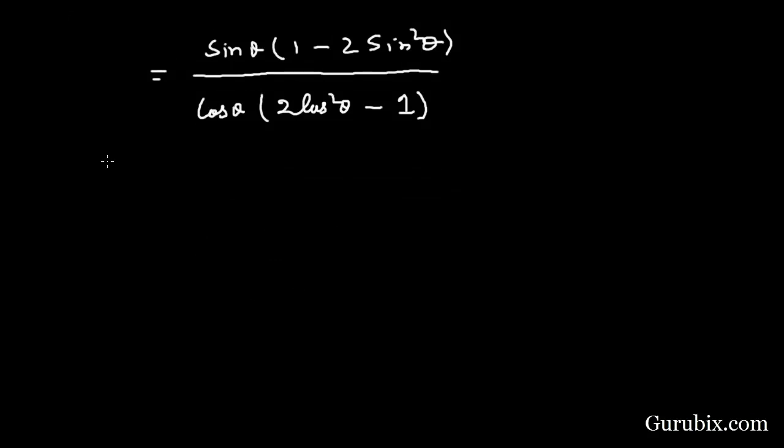Now we shall apply the identity sin²θ + cos²θ = 1. This means we can place (1 - sin²θ) in place of cos²θ.